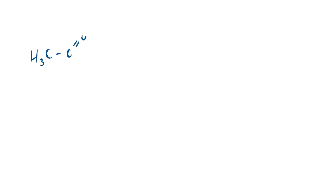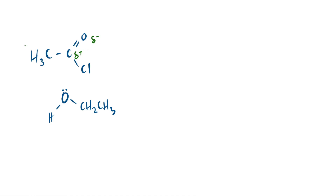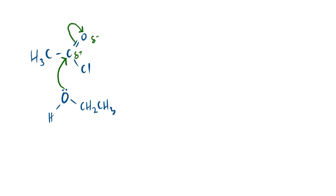Now let's move on to alcohol. Just like before, we start with ethanoyl chloride and react it with an alcohol — in this case ethanol. Very similar to water: you have your OH and then the carbon chain, so O-H-CH2CH3. There's a lone pair on the oxygen and a dipole (delta negative, delta positive). The curly arrows are identical to water — you can essentially copy and paste, just change the H for CH2CH3 as the first arrow, and the second goes from the double bond onto the oxygen.